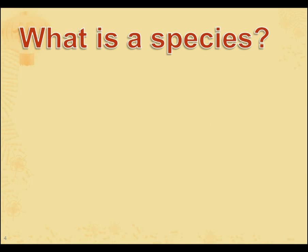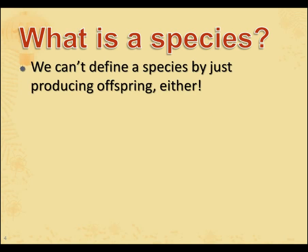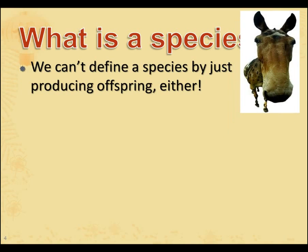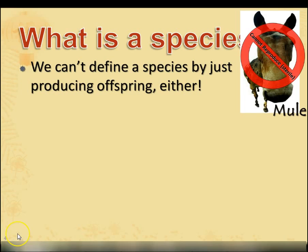So what is a species, if it's not looks? We can't define a species by just producing offspring either. Otherwise, we would say the mule is a new species — but it's not. They're sterile. A mule is the offspring of a male donkey, called a jack, and a female horse, called a mare, but they themselves are sterile. Mules can't really have babies.